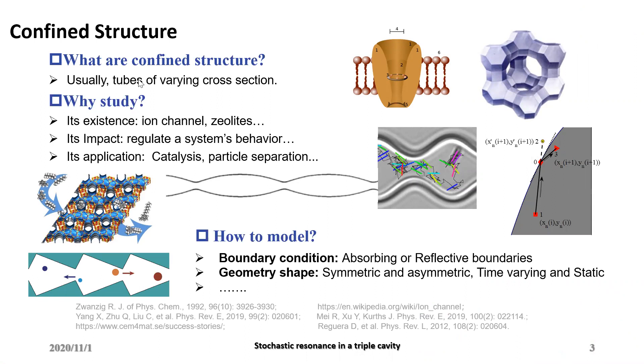Generally, a confined structure is understood as a tube of varying cross section, like this. It exists in many active systems like ion channel, carbonate tubes, and zeolites. The existence of a confined structure has an important role in a system's behavior. Here are examples, any figure rows are confined inside the structure.